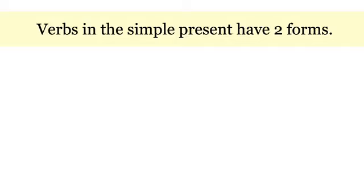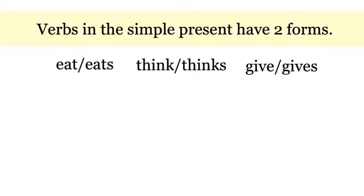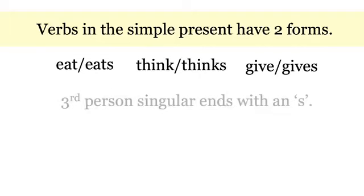Verbs in the simple present have two forms, like eat and eats, think and thinks, and give and gives. Third person singular ends with an S. He sleeps.